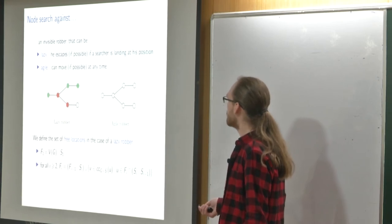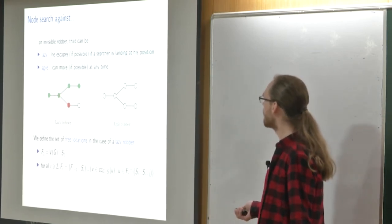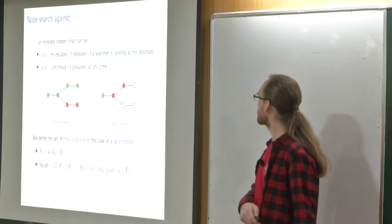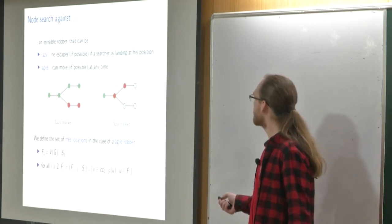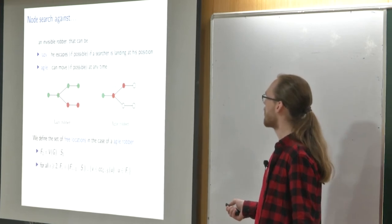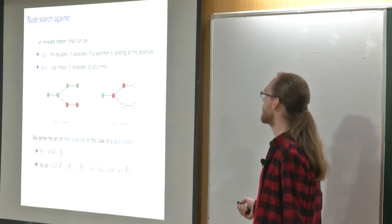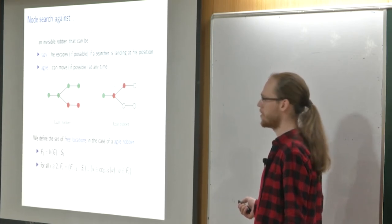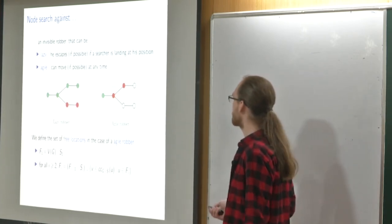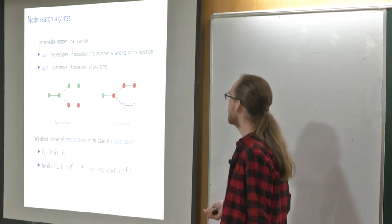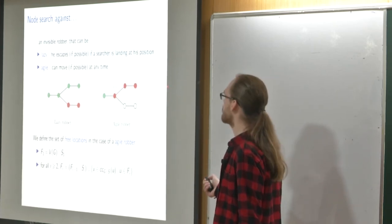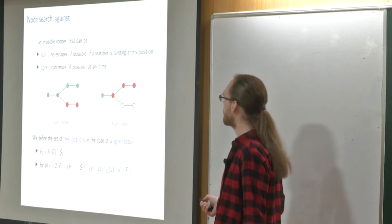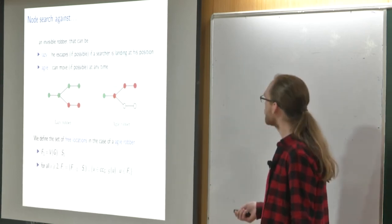Continuing to the difference with the agile robber: in the lazy robber case, we could remove a searcher and continue further. But with an agile robber, if he sits here, he can move there even without us stepping on his place. So we have to keep a searcher there and use another one to go there. In this case, we need three searchers where previously only two were needed.